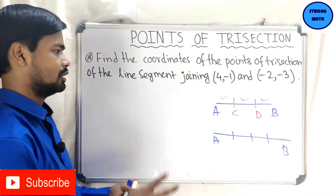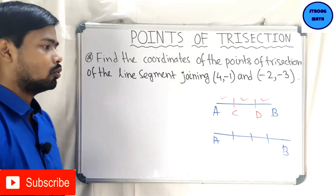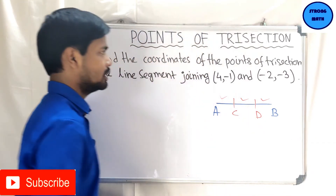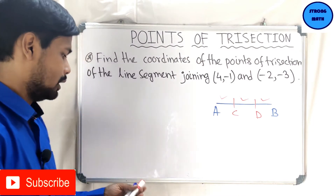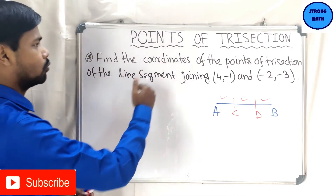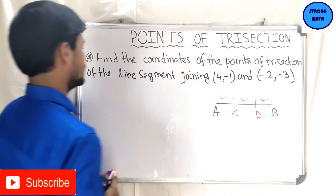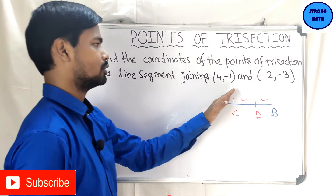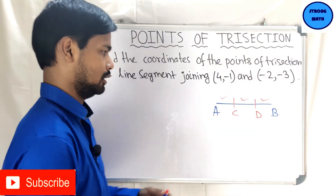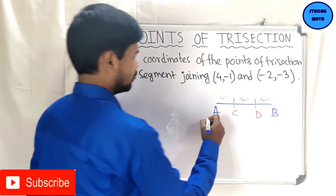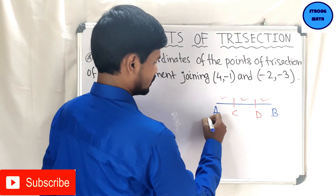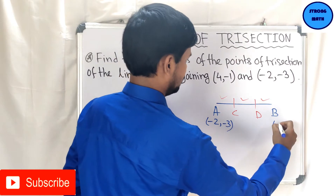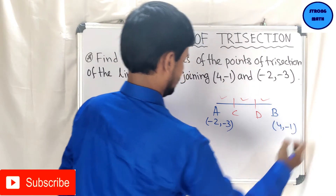In this problem we have to find the coordinates of the two trisection points C and D. The problem is: find the coordinates of the points of trisection of the line segment joining (4, -1) and (-2, -3). Let point A be (-2, -3) and point B be (4, -1).